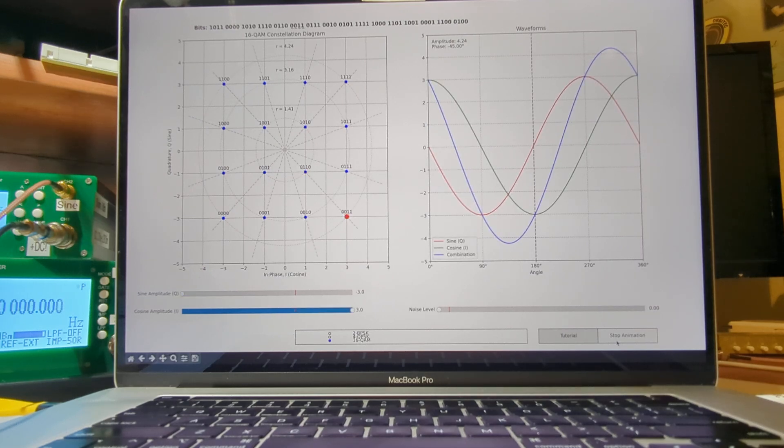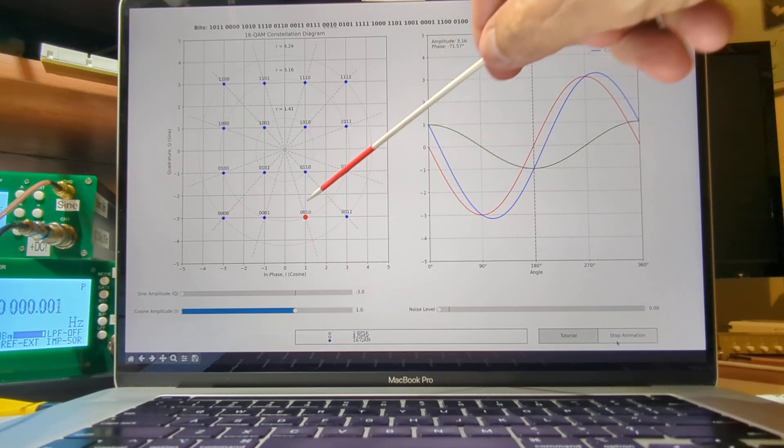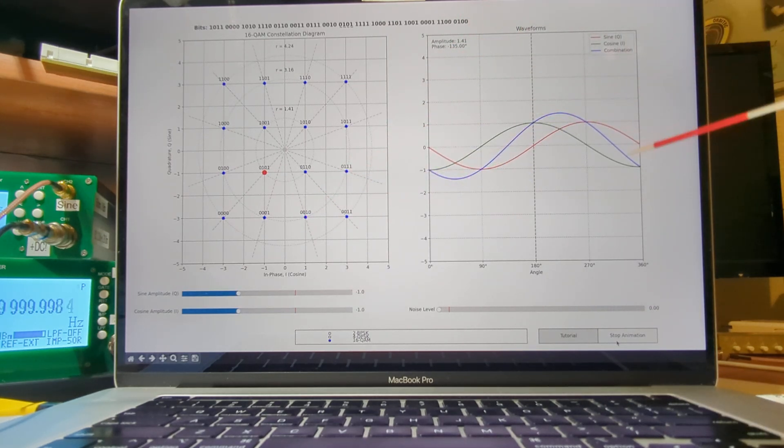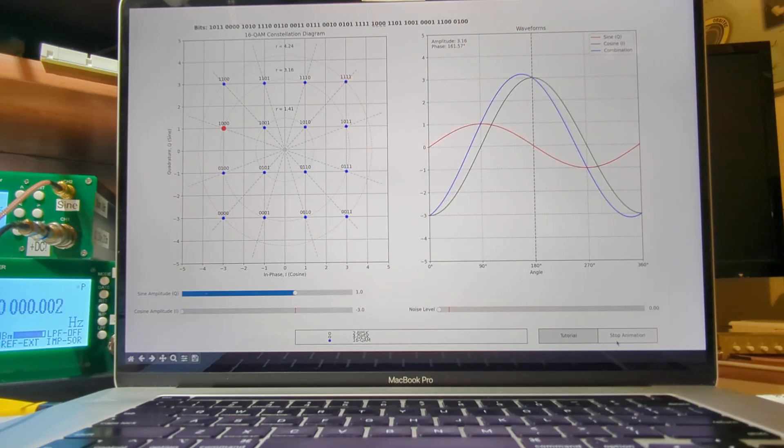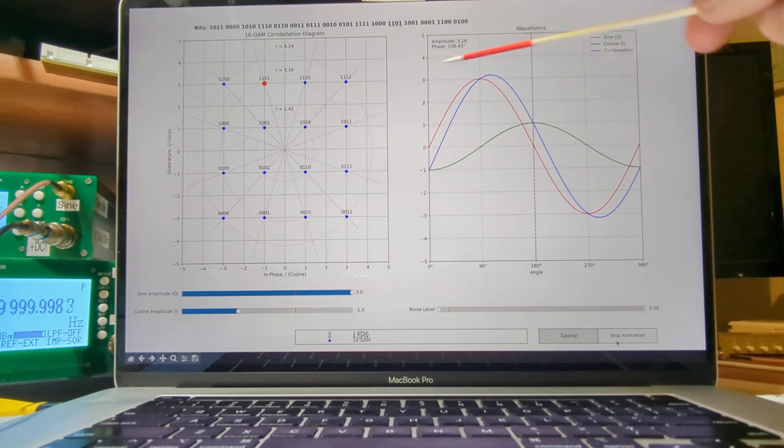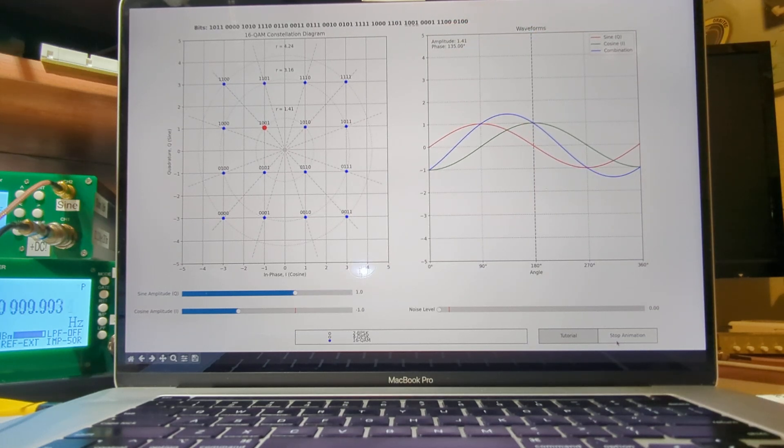And so that's what this animation is showing. You're walking through groups of four bits, picking off the corresponding point that produces the output sine and cosine. The sine in combination produces the output RF transmitted waveform in blue. The amplitude and the phase of that output signal is shown up here.